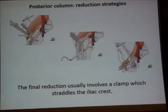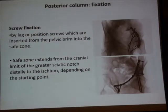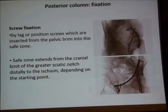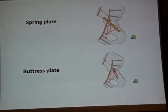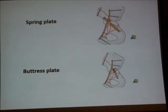The posterior hemitransverse element is fixed with lag screws. If it is comminuted, other solutions may be used: a spring plate under the pelvic plate, or a buttress plate. If these plates are planned, the modified Stoppa approach will help more than the ilioinguinal approach.